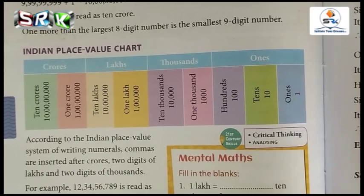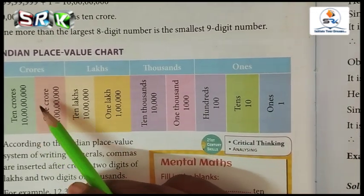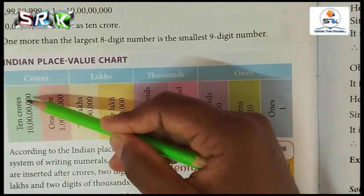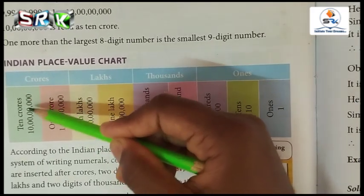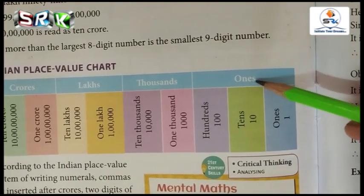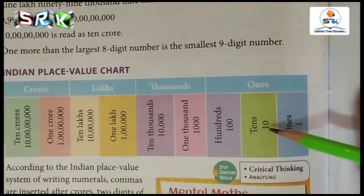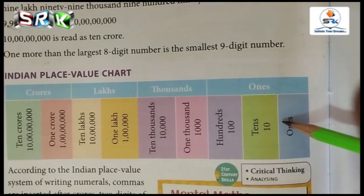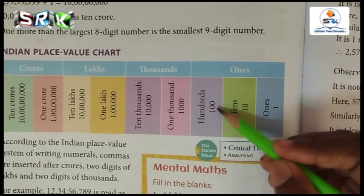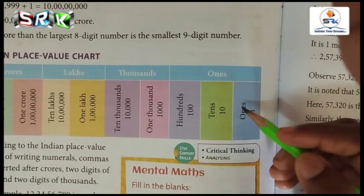In the place value chart, in previous year you all learned about lakhs. This year you have to write in a crore — how many zeros? One, two, three, four, five, six, seven, eight — eight zeros, which is called as crore. Total nine digits. First, see the ones period: ones stands for one. Next, tens — tens stands for ten, one zero. Next, hundreds — three digits, two zeros.